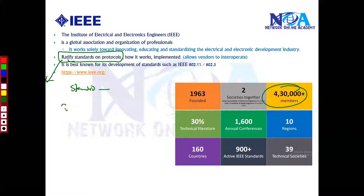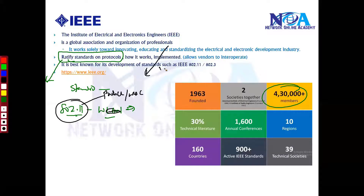For example, there is something called the 802.11 standard, which is designated for wireless LAN implementations. Now exactly how this product is going to behave, how this is going to work — whenever any vendor introduces any wireless product, they're going to follow this particular standard. The way it has to communicate or send the signals is all defined as per the standards.